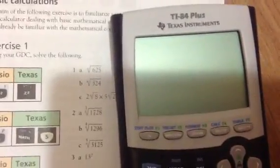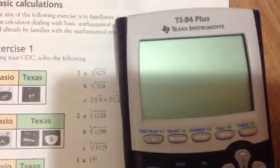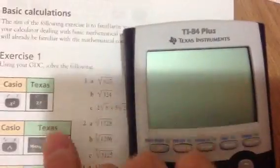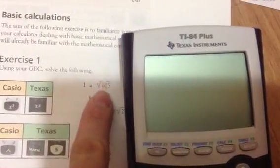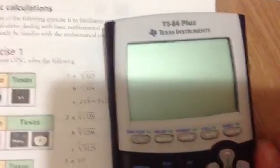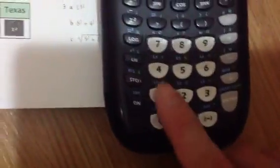Let's use the GDC to calculate some of these problems. Let's do the square root of 625. It's pretty basic. First, turn the calculator on.